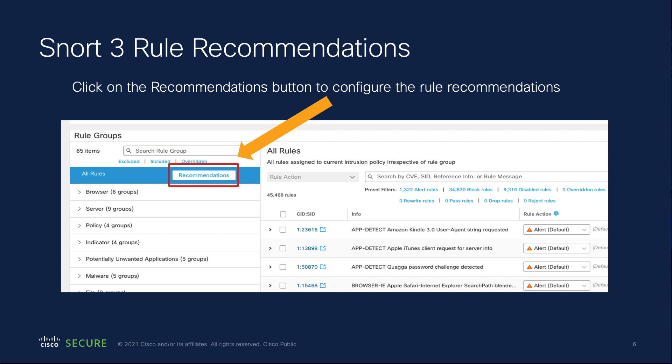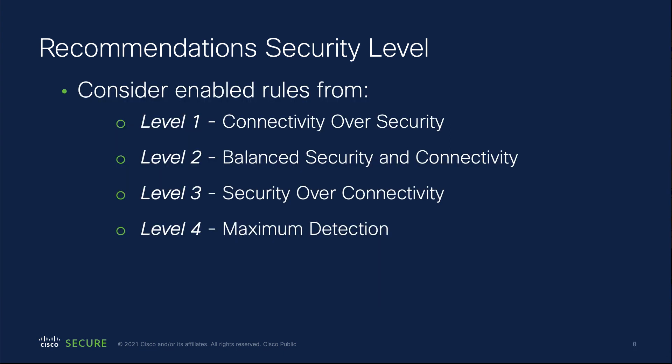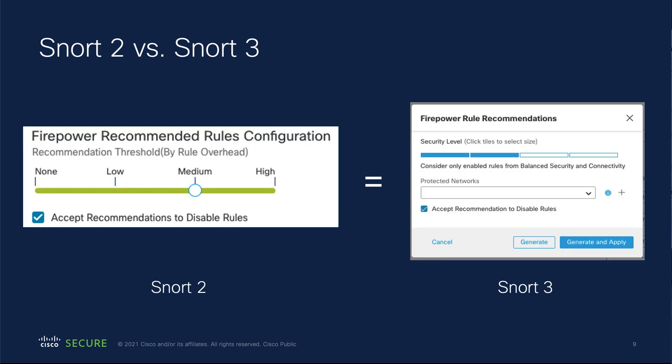Once you click that button, you'll see a dialog. This is where we have the security level setting. Security level 1 is the connectivity policy, level 2 is the balanced policy, level 3 is the security over connectivity policy, and level 4 is maximum detection. That's true in 7.1 and in 7.0. In the future, look for more changes — don't get too hung up on levels just being policies right now, as we're going to be adding tweaks so that those levels will mean more than just a policy. For now, a level means a policy or a rule set.